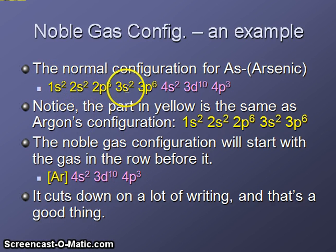Earlier we determined the electron configuration of arsenic which is found right here. 1s2, 2s2, 2p6, 3s2, 3p6, 4s2, 3d10, 4p3. Notice that the part that's in yellow is going to be the exact same as what the electron configuration for argon would be. So to write the noble gas configuration for arsenic, we would fill in for this information AR in square brackets followed by the information that's in purple, 4s2, 3d10, 4p3. So this can save us quite a bit of writing as we're writing electron configurations.